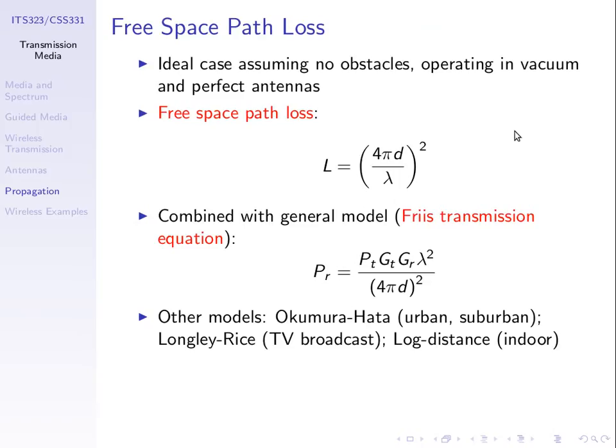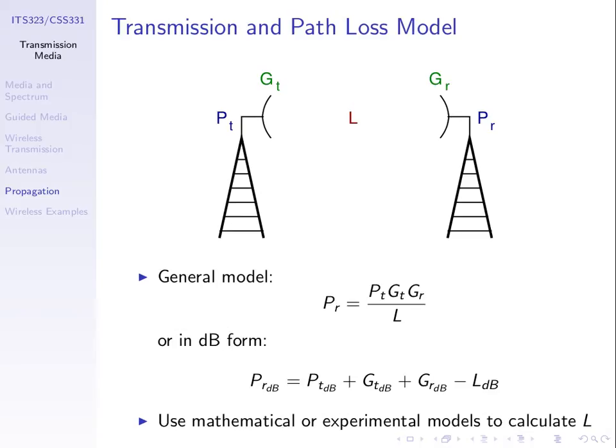We used the free space path loss model — out in space, with no obstacles and no atmospheric effects. If we transmit a signal d meters at wavelength lambda, we can calculate the loss L from that equation. So if we know PT, PR, GT, GR, and the distance, we can calculate the loss, or given the loss, find the distance — which is what we did in a previous example.